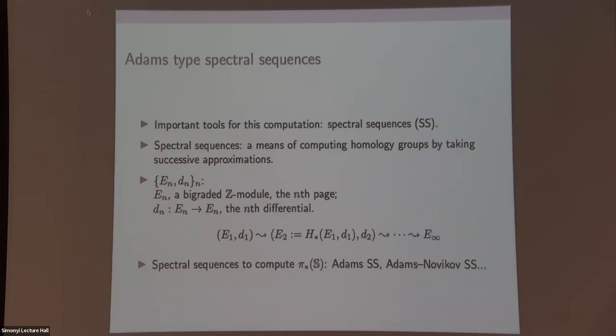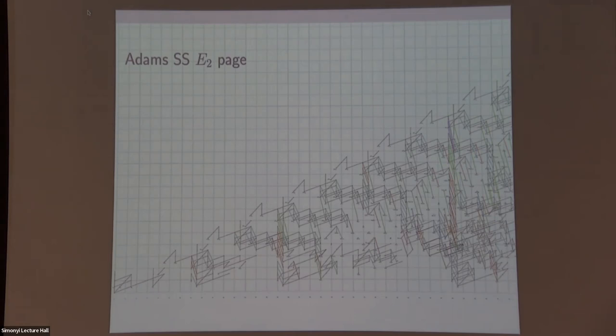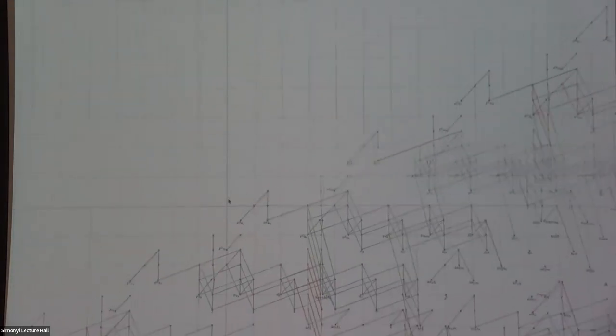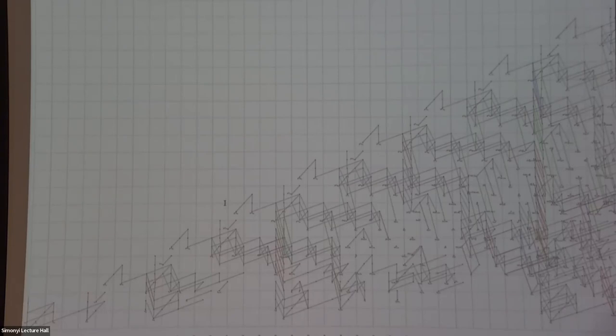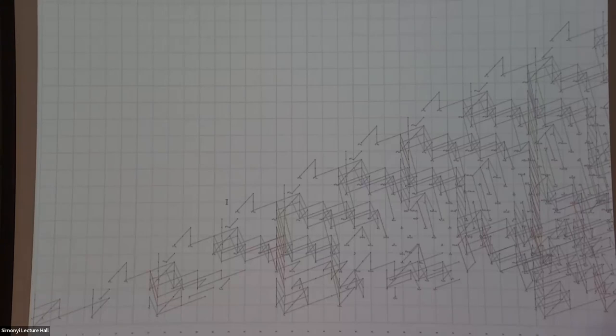On the next page, I will show you some charts of these two spectral sequences, which when I first saw them, I felt overwhelmed. This is the Adams spectral sequence E_2 page. This is a bigraded thing, a bigraded Z module. If you zoom in, you can see lots of dots and lines. These dots, they are the Z modules—actually here each dot is a Z mod 2. The lines are indicating the multiplicative relations of these dots. The colored lines are differentials. This is just to give you a sense of how the spectral sequence is like. This is the E_2 page.